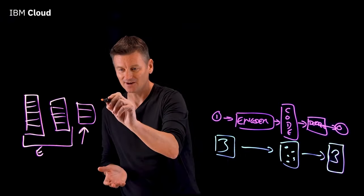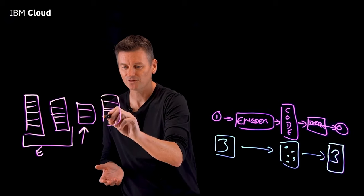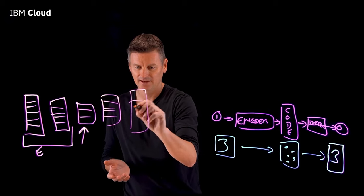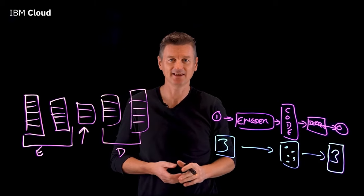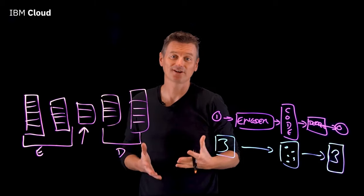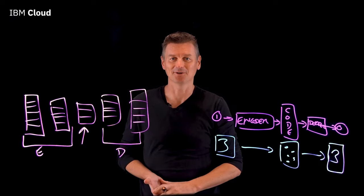Then we have the decoder, which is reconstructed from that bottleneck. That's the decoder. And it's reconstructed from the latent space representation to generate the output.